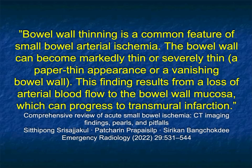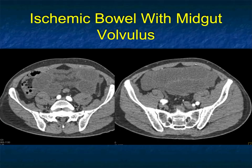Bowel wall thinning is a common feature of small bowel arterial ischemia. The bowel wall can become very thin — people describe almost a vanishing bowel wall, which is why with ischemia on the arterial side you can get perforation. These findings are a result of loss of arterial blood flow to the bowel wall mucosa, which can progress to transmural infarction as well as perforation.